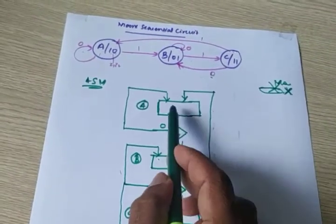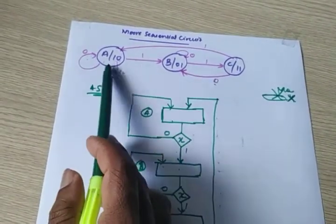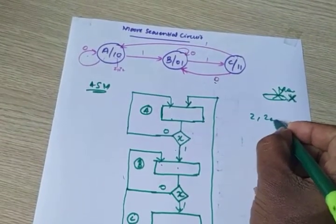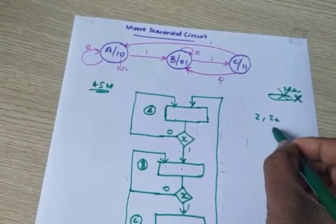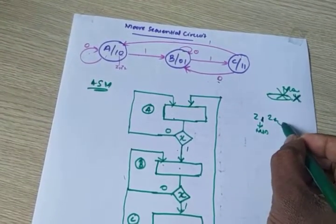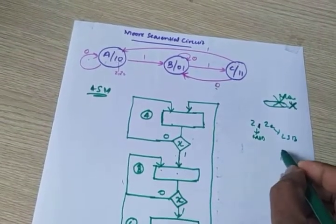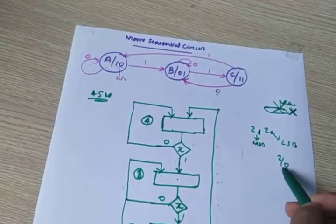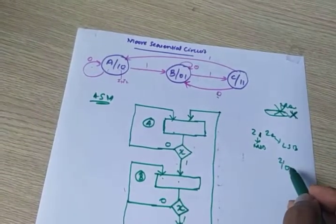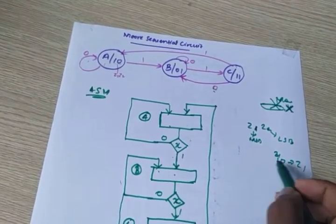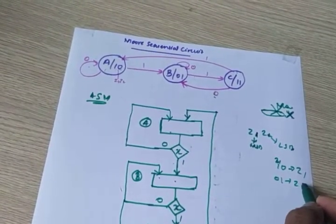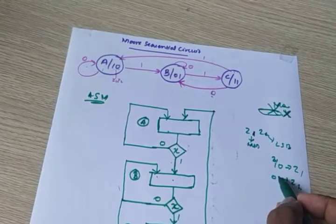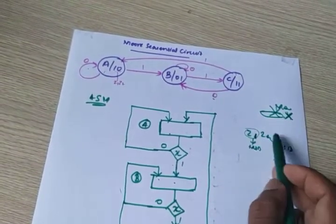Now we need to write the output inside the state boxes. Here in state A, the output Z1 Z2 combination is written. Z1 is the MSB and Z2 is the LSB. For output 10, I write it as Z1 only because the MSB is 1 — the highest bit is MSB, so it is represented as Z1. For output 01, I write it as Z2, because the highest bit is the LSB.